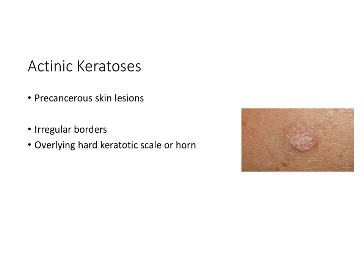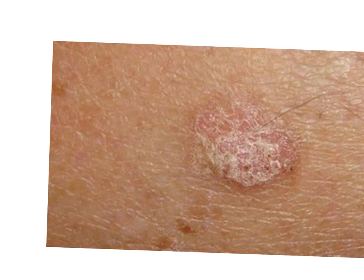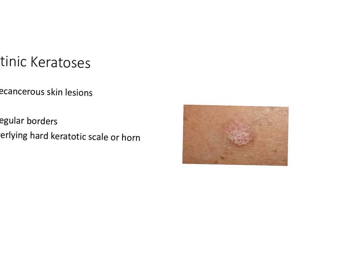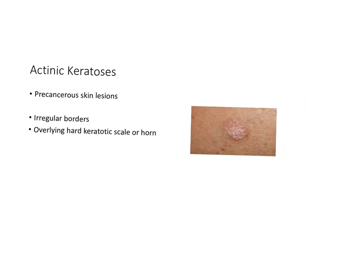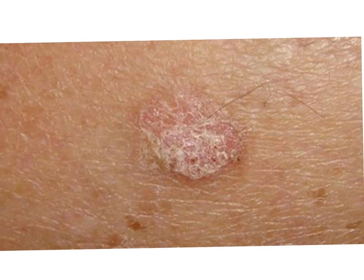Actinic keratoses are pre-cancerous skin lesions with irregular borders. Looking at this lesion, it's kind of hard to tell where the lesion starts and where normal skin is — it's not a discrete lesion. On the top of it, there is a hard keratotic scale — a scaling hard surface, or even a horn that kind of sticks out from the lesion. The part that would feel firm is this scaling that's hardened on top.